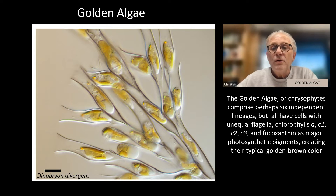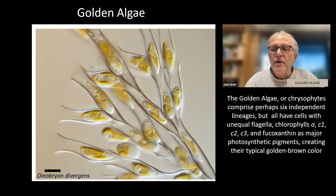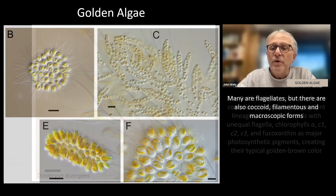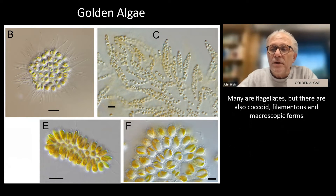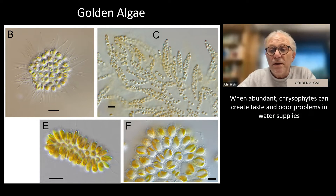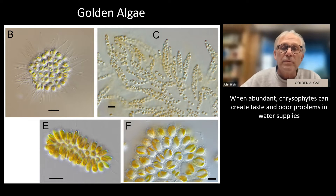The golden algae, or chrysophytes, comprise perhaps six independent lineages, but all have cells with unequal flagella, chlorophylls A, C1, C2, and C3, and fucoxanthin as major photosynthetic pigments, creating their typical golden-brown color. Many are flagellates, but there are also coccoid, filamentous, and macroscopic forms. Many species are common members of phytoplankton assemblages in lakes. When abundant, chrysophytes can create taste and odor problems in water supplies.